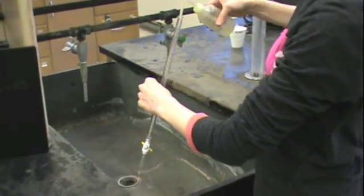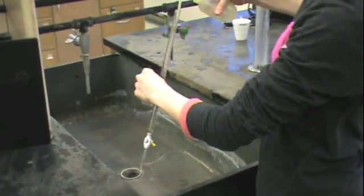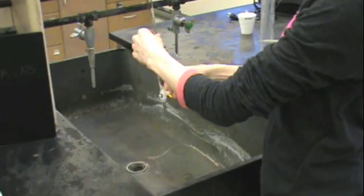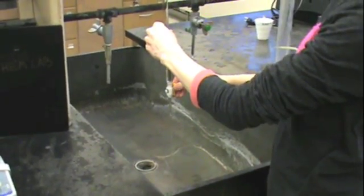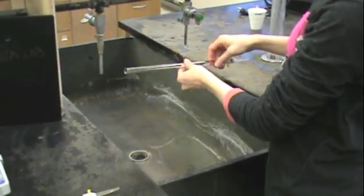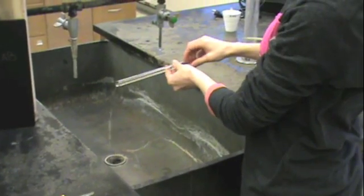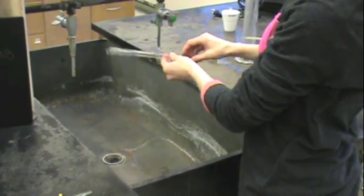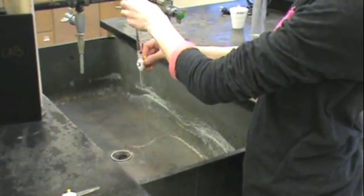Obtain a burette and fill it with deionized water from your wash bottle. You'll want to drain a little bit from the tip and then twirl your burette to get water on all the sides of the burette, and then drain the remaining water from the tip.